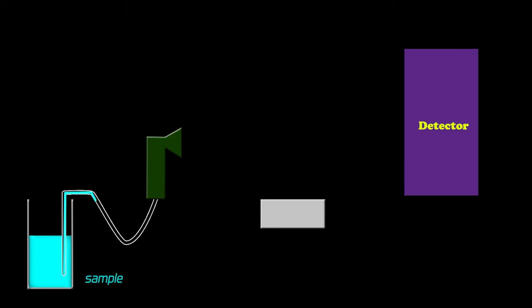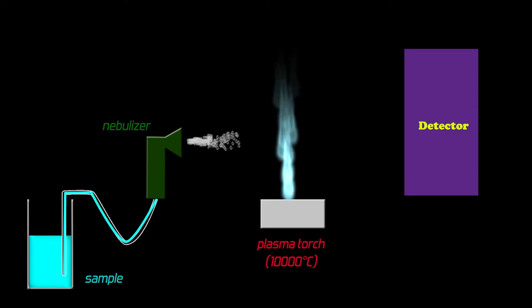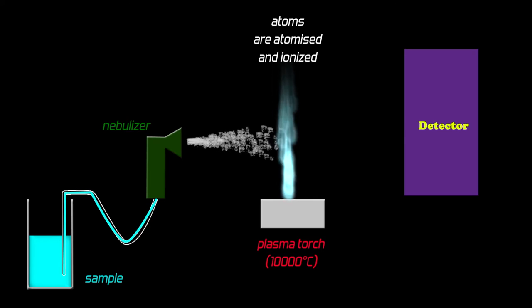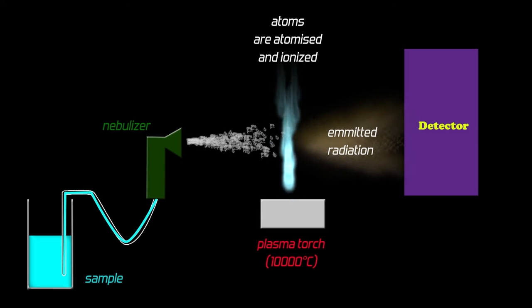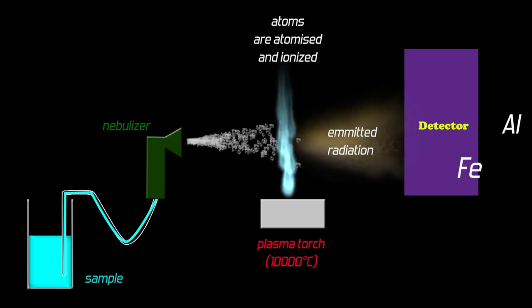The sample is transferred to a nebulizer and directed into a plasma torch at 10,000 degrees. Atoms and molecules are immediately atomized and ionized, and the emitted radiation from the excited ions can be detected and attributed to a corresponding element.